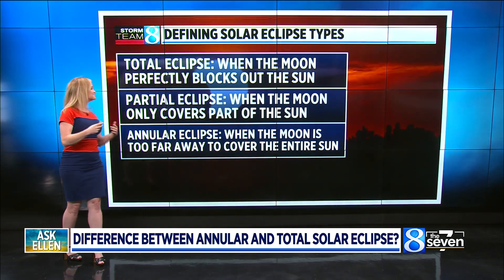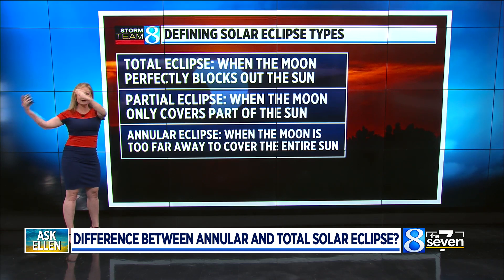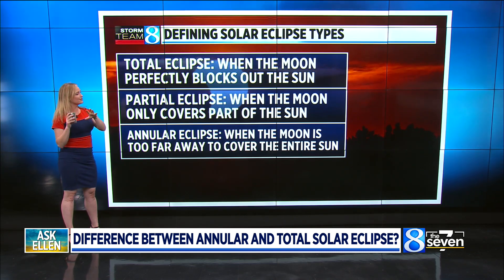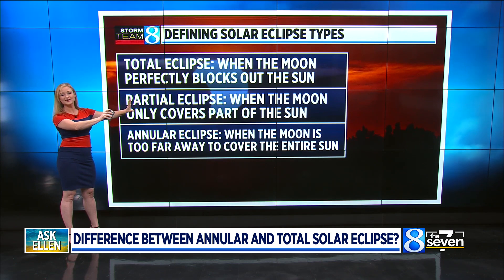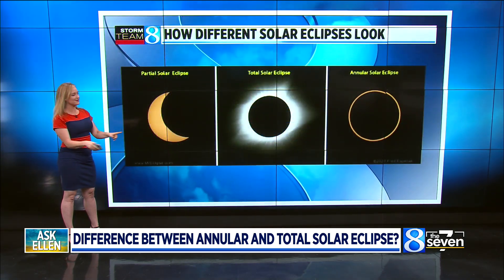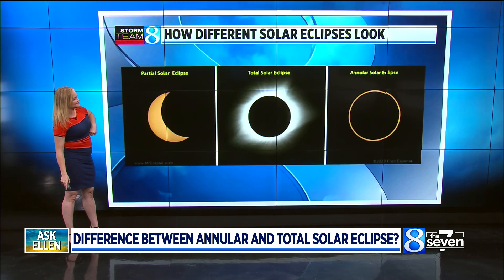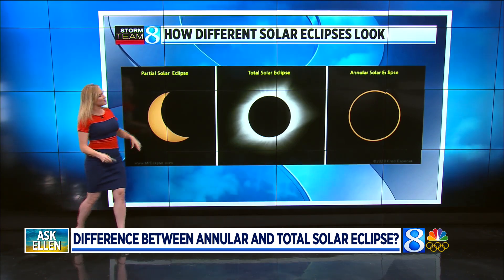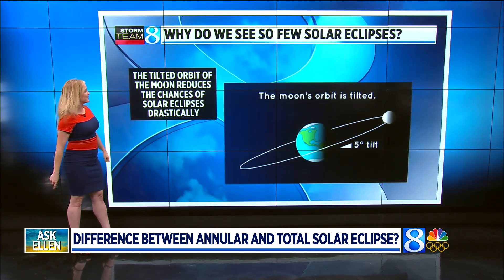So these are the different types of eclipses. A total eclipse is when the moon perfectly blocks out the sun. A partial eclipse is when the moon only covers part of the sun from your perspective on the earth. And an annular eclipse happens when the moon is so far away in orbit that you can still see a portion of the sun around it. A partial eclipse looks like a bite taken out of the sun. A total solar eclipse is when you get that cool corona. And an annular solar eclipse is when you get this ring of fire around the sun.